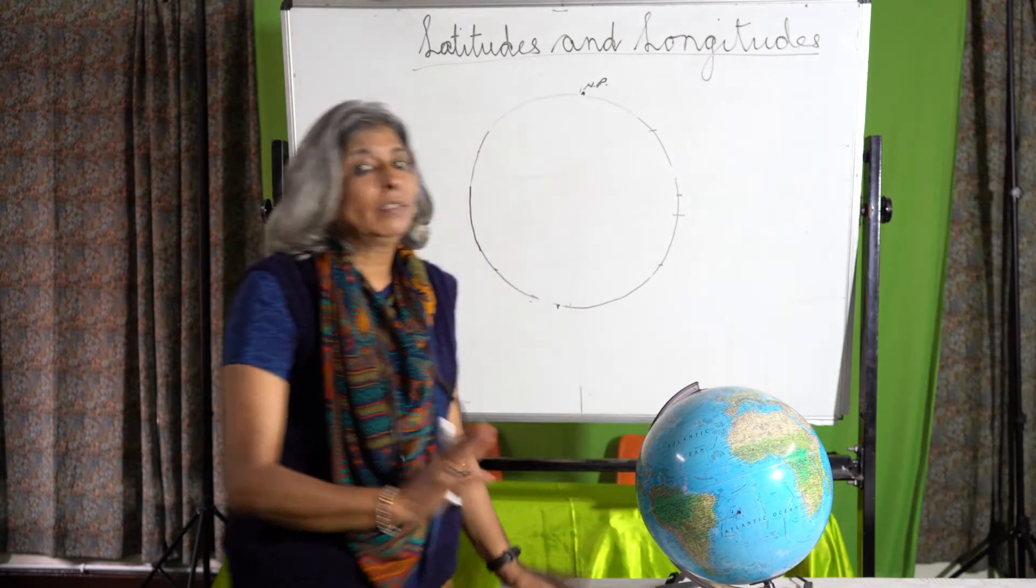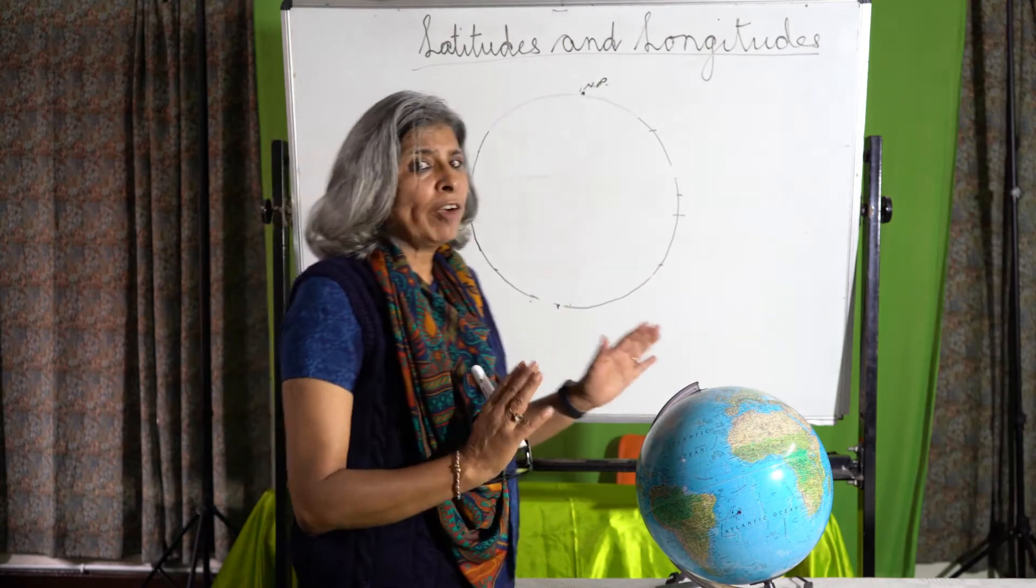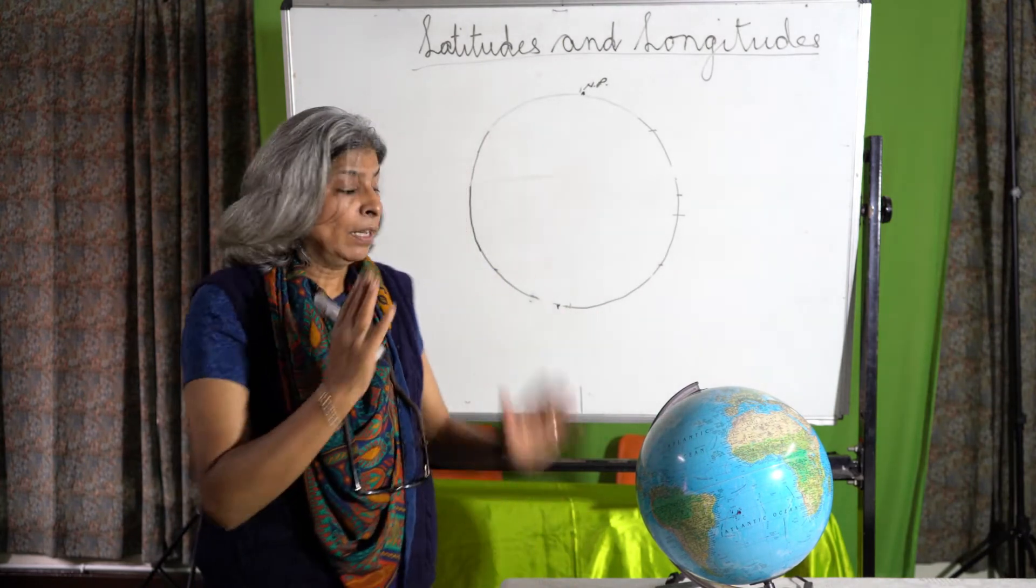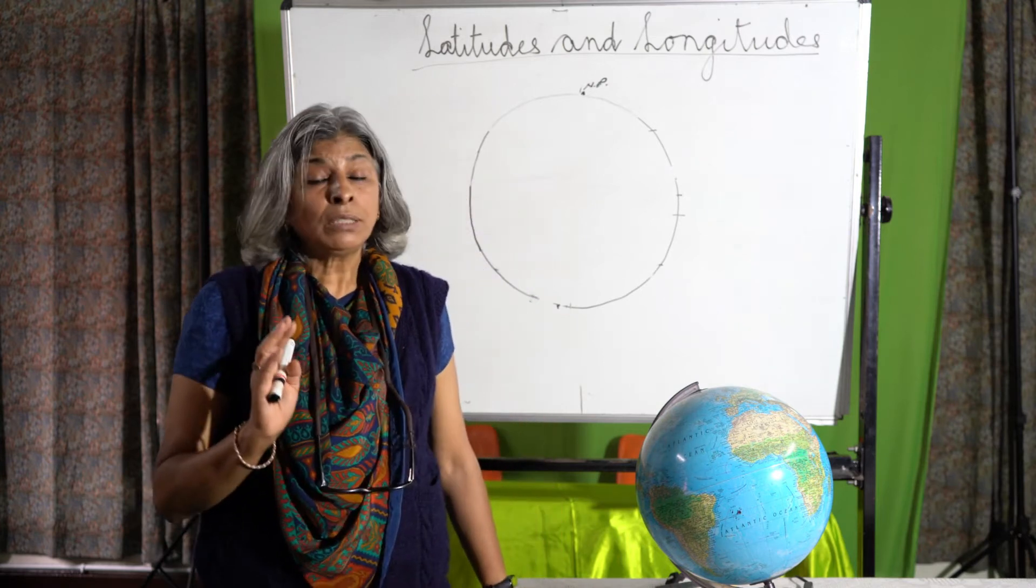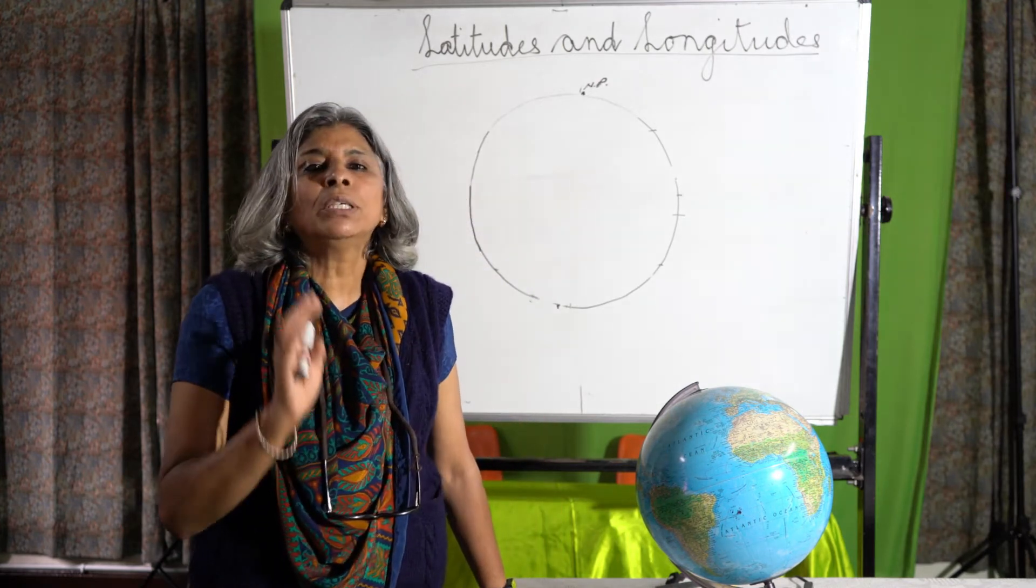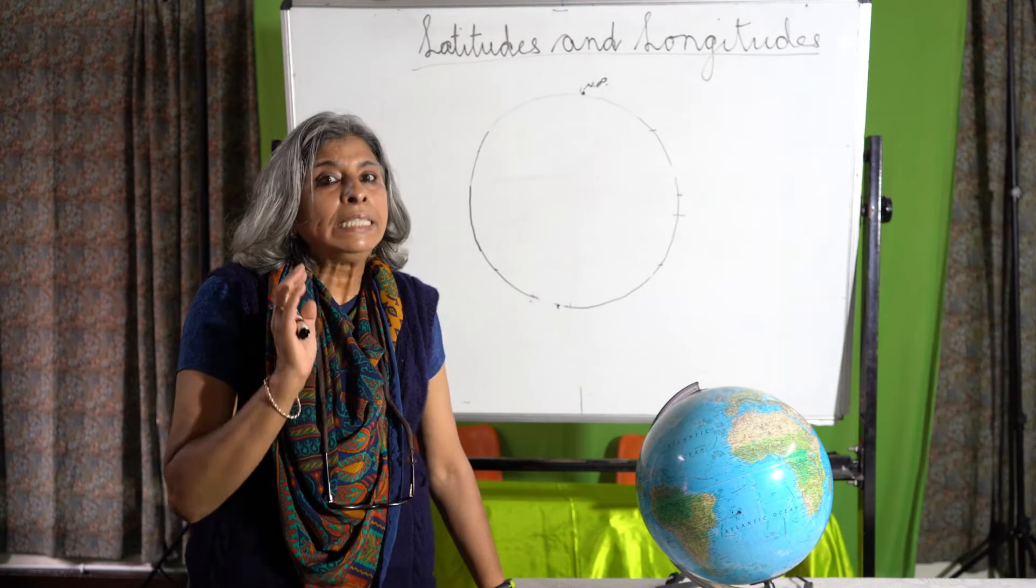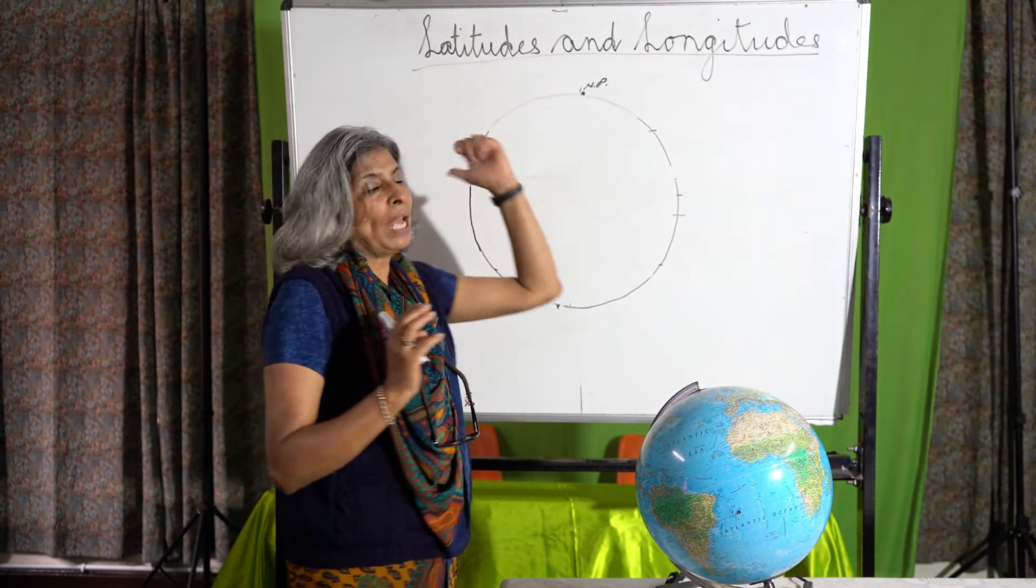Now children, when we look at the globe or a map, what do we find? We find in it many horizontal and vertical lines. What are these horizontal and vertical lines? These are the lines of latitude and longitude.